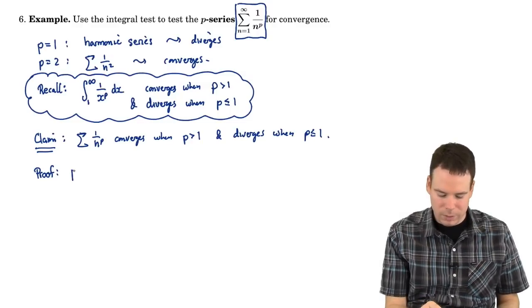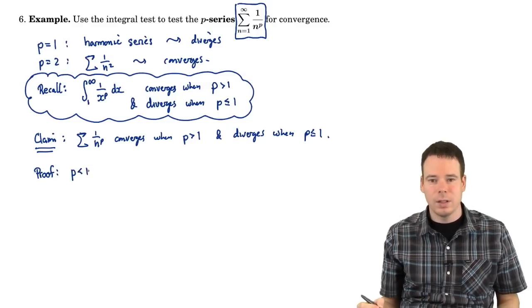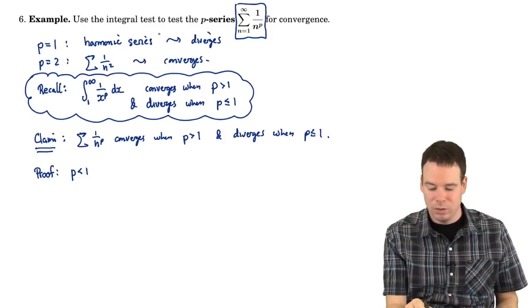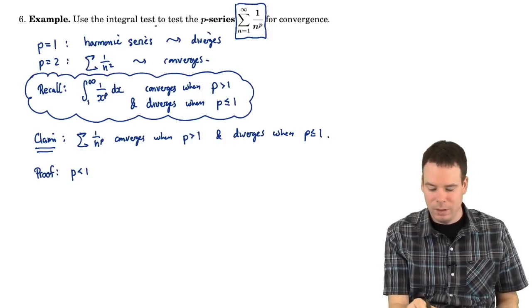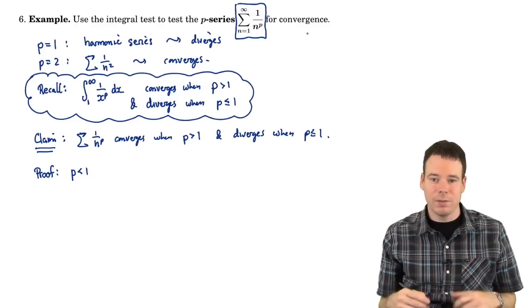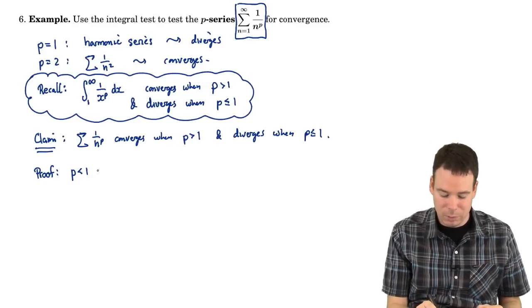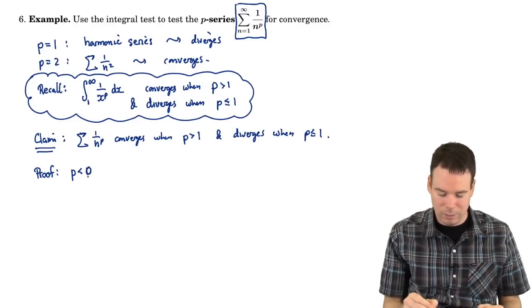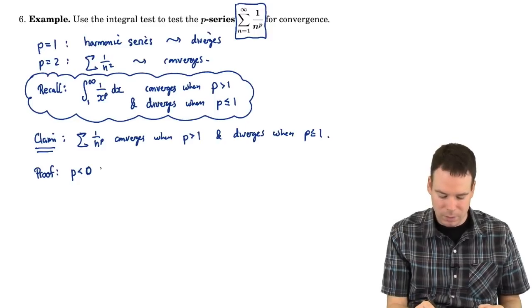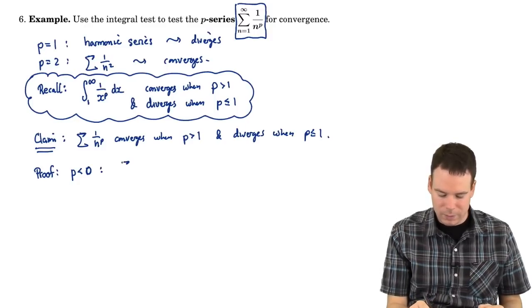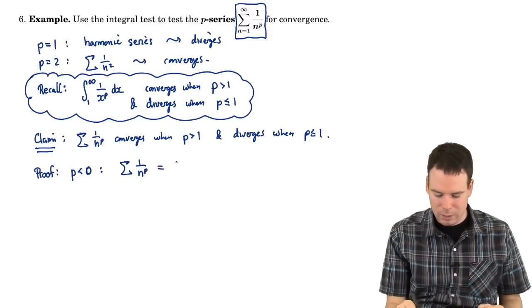Well, the problem is if p is negative, this is not saying anything about p being positive. This is in general about any p, so we have to consider the case that p could potentially be negative. When p is less than 0, what do we have? Well, we have that the series 1 over n to the p is actually n to the absolute value of p, so to this positive absolute value of p is now some positive exponent.